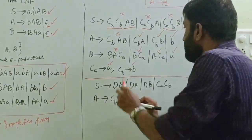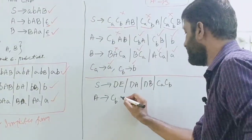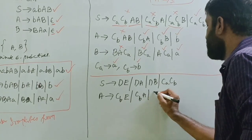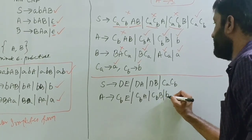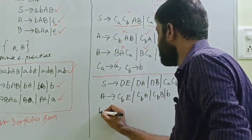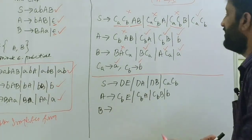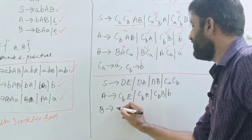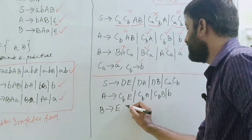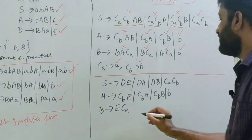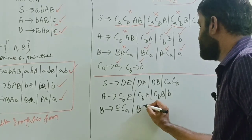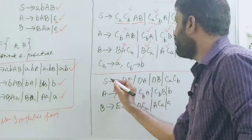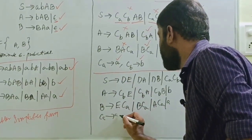Take production A: A tends to CB A as it is, slash then in place of AB we use E, so write E, slash CB B as it is, slash B. Take production B: B tends to BA — in place of BA or AB we use E, so B tends to E CA, slash B CA, slash B CA, slash A CA, slash A.